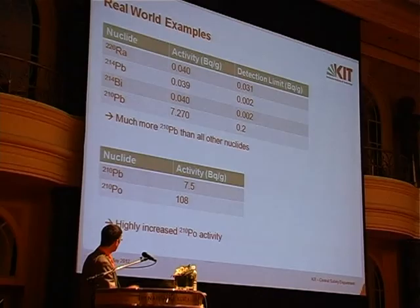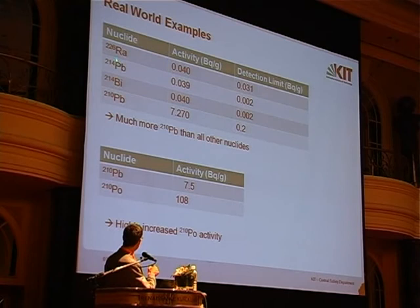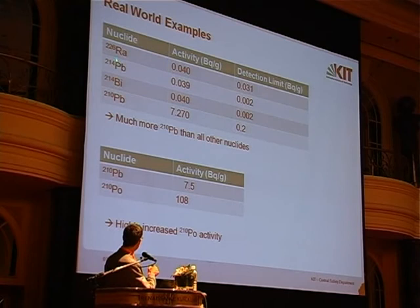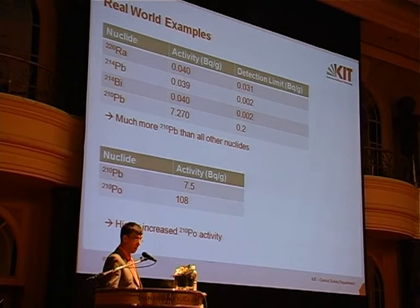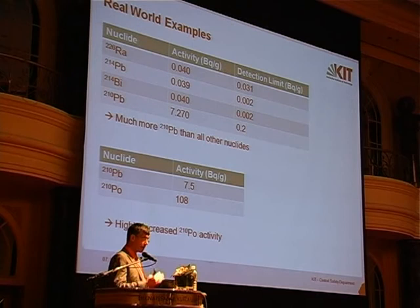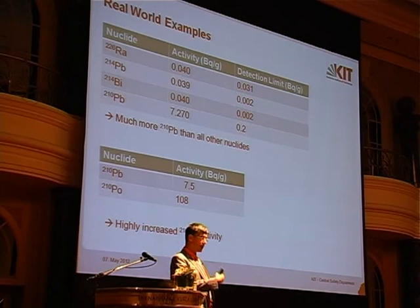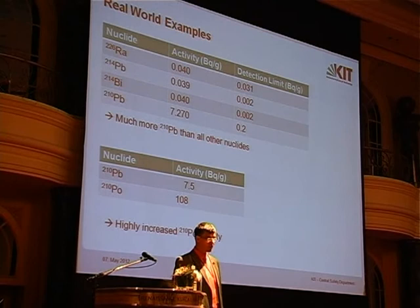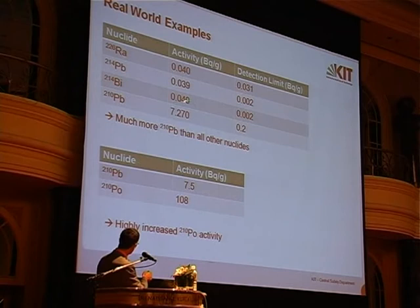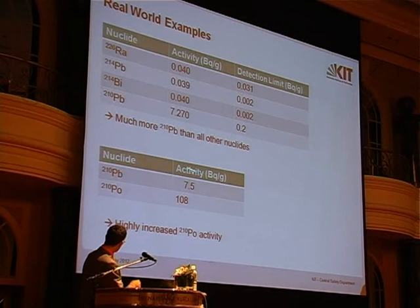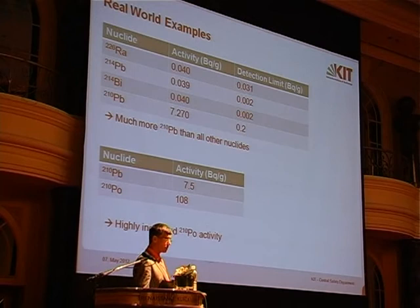Some real world examples — these are samples we analyzed in our lab coming from very close to the rare earth industry. You can see here: radium is almost nothing, but a lot of thorium-210 is present. So the decay chain can be changed. That is why you need to control each radionuclide individually, as stated in the Radiation Protection Ordinance. Each nuclide in the decay chain must be below the threshold. You can see here we have a lot of lead-210, and polonium-210 is a daughter product of that.